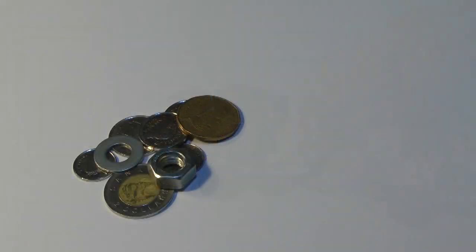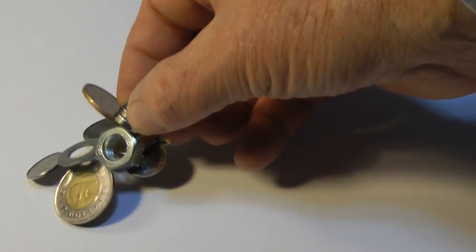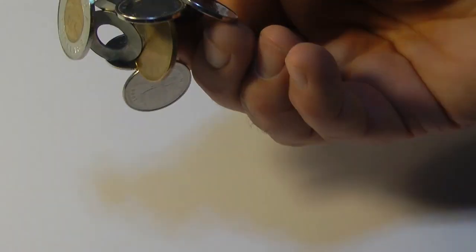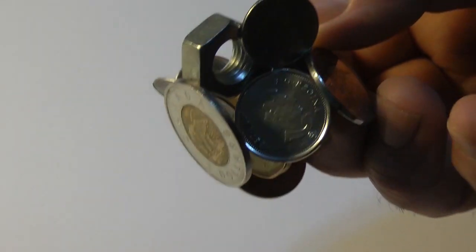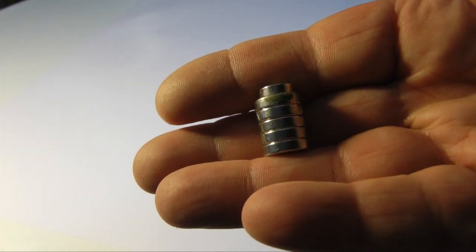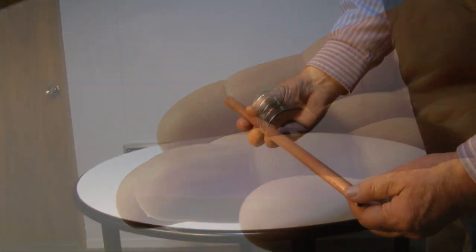These powerful rare earth magnets make it possible to demonstrate an important physics law, Lenz's Law. To demonstrate this, we'll use the magnets stacked together and a length of copper pipe.